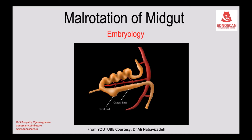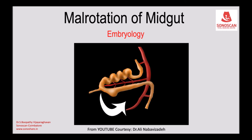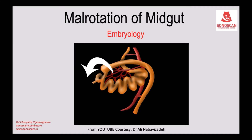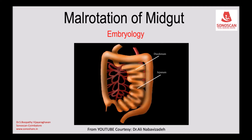The cecal bud ultimately becomes the cecum and appendix of the colon. During the 10th week of development, the midgut retracts back into the abdominal cavity and rotates an additional 180 degrees counterclockwise, for a total 270-degree rotation of the intestines. The duodenum, jejunum, and ileum are now inside the borders of the entire colon, composed of ascending, transverse, descending, and sigmoid parts.